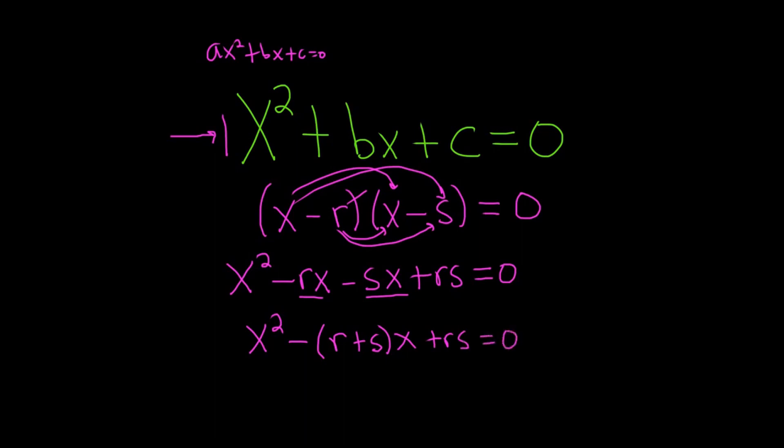So now we're going to equate coefficients. So basically we're just using matching. Let me use a different color so you can see. So b here has to be equal to negative (r + s), using just matching, equating coefficients. So b is equal to negative (r + s). And then c is equal to rs.